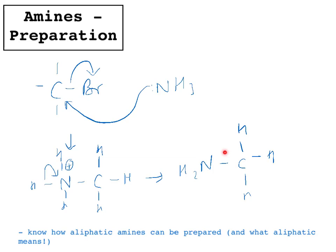What will happen is that this compound can then attack the haloalkane again, and you can form multi-substituted amines. This first product is a primary amine — N attached to two H's and a carbon. You will also get secondary amines, where only one hydrogen is attached to the nitrogen, and tertiary amines, where there are no hydrogens attached to the nitrogen. If you're not careful, you'll create those when you don't want to, if you allow the reaction to keep substituting with the haloalkane.